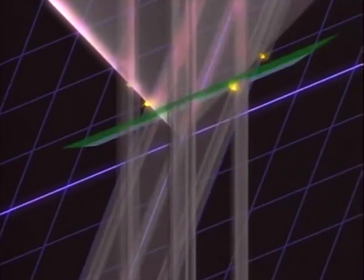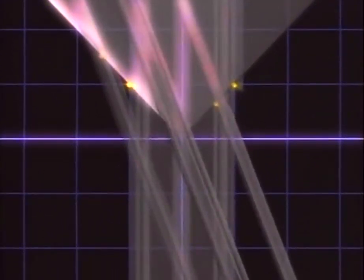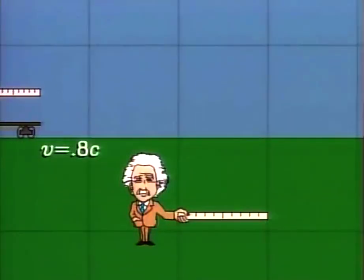So Henry thinks one of Albert's signals goes first, then both of his, then Albert's other signal. Of course, if Henry were drawing the picture, he would draw his lines of constant place and constant time perpendicular to each other. Amazingly, that wouldn't change the light cone at all. This way of looking at things is called a space-time diagram, and many of the strange effects of relativity can be visualized this way.